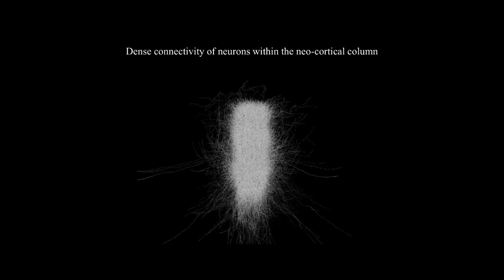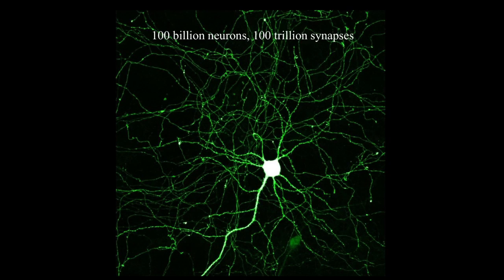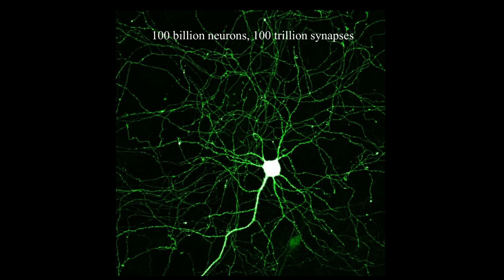Another example: if you take a cortical column in the brain, it's immensely complex. The human brain has 100 billion neurons and about 100 trillion synapses. It would be ludicrous to suppose that the wiring diagram of your brain is somehow captured by the information content of DNA.